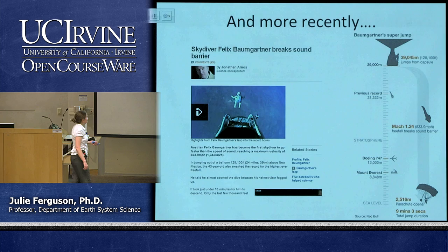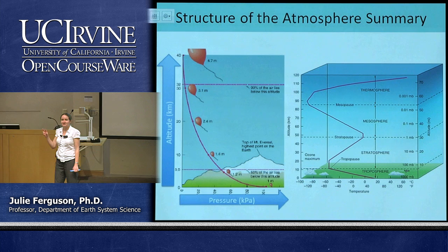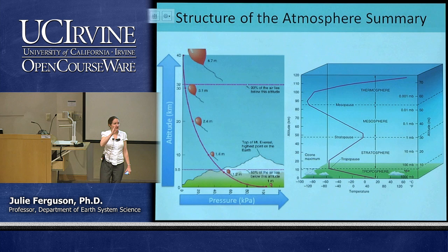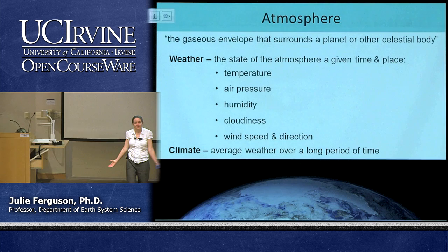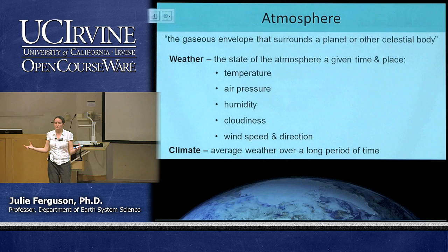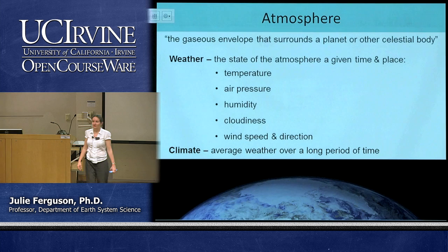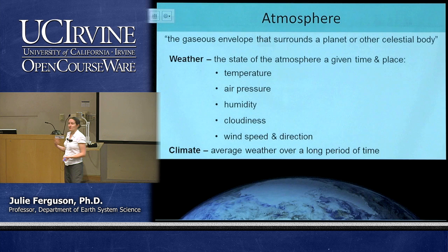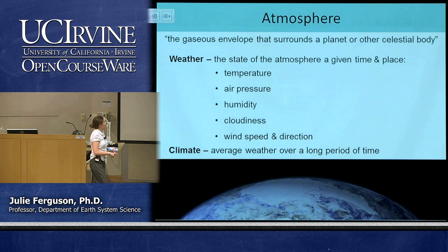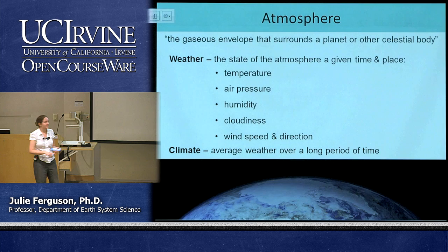So that was our little summary: we have two ways of thinking about the structure of the atmosphere — first with pressure, which decreases as we go up, and also with temperature, which alternates between cooling and warming. Now let's think about our weather, because that's what we really care about day to day. Our atmosphere is what surrounds any particular planet or celestial body, and when we talk about weather, usually we mean five particular things: temperature, air pressure, humidity, cloudiness, and wind speed and direction.